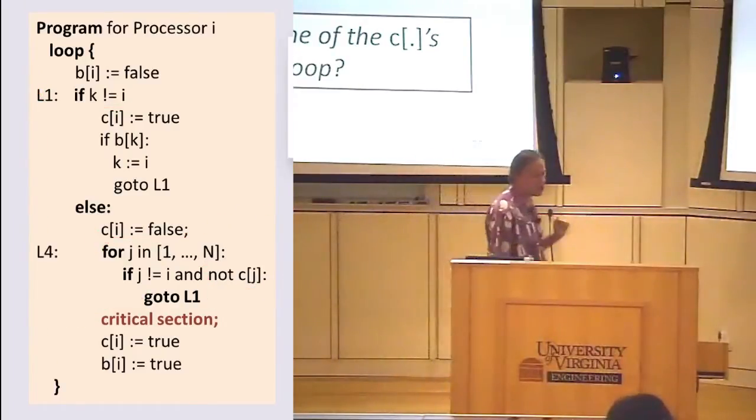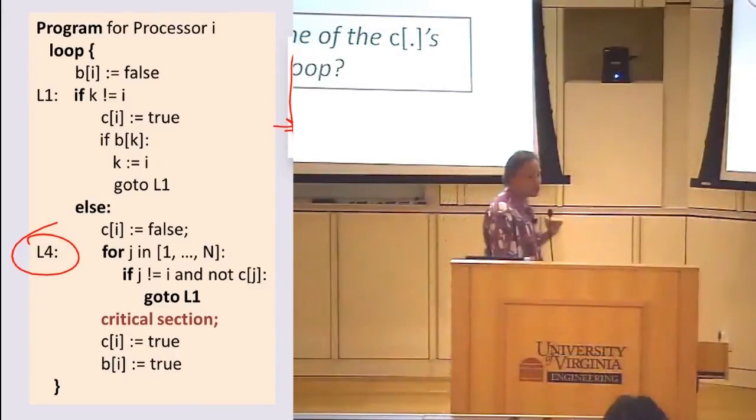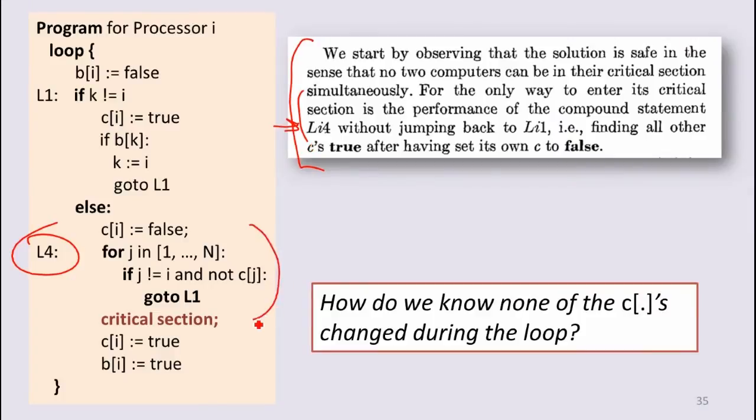So this is how Dijkstra argues that it does. We're saying that there are no two computers could enter this critical section. They could never get through this loop without finding another one that had set that to false. So the only way for one to get through that is if it's the only one that does. This is a little bit of a sketchy argument by itself. This would be fine by itself if we knew this was atomic. But of course, if that was atomic, then we've got a much more powerful memory system or processor than we thought we had.